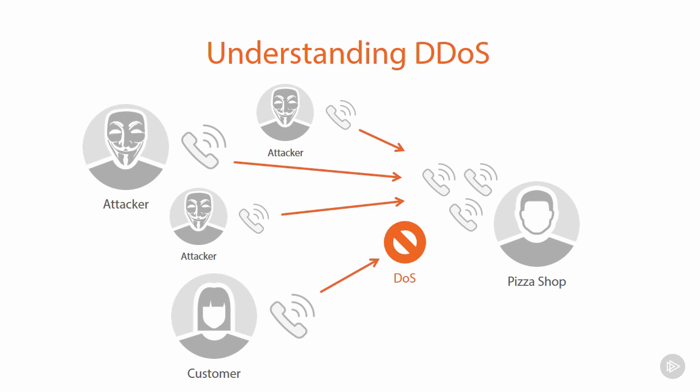So the attack has now increased in scale. And even though the target has additional resources to handle additional load — those multiple phone lines — with enough simultaneous attacks distributed out to different callers, the service can still be overwhelmed and legitimate customers are unable to order their pizza. That's the basic mechanics of a DDoS attack, and DDoS is going to feature really heavily in this course.